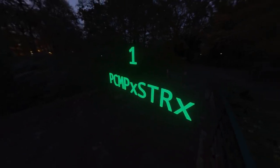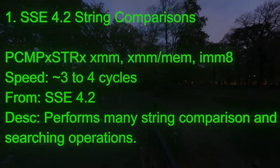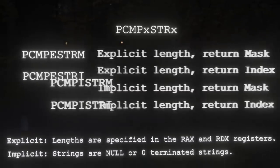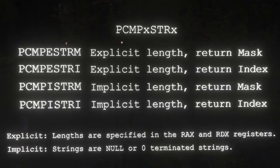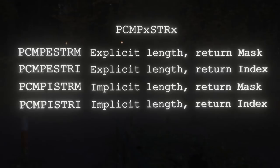The chaos and madness have reached their peak: the SSE 4.2 string comparison instructions. There are four instructions, but they're really just one instruction with a whole bunch of different options in the mnemonic. Let's call it PCMPxSTRx for all four. We've got a choice of I or E, and also a choice of I or M on the end of the mnemonic. The I/E specifies whether the length of the string is implicit or explicit — meaning null-terminated or with lengths specified in RAX and RDX. The I/M on the end specifies whether we want an index or a mask of the results; the index, if you want it, is stored in RCX.